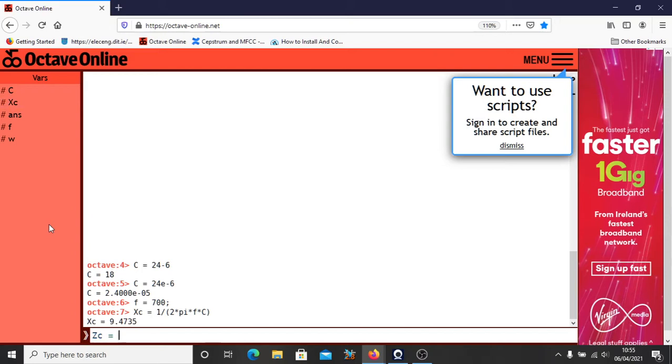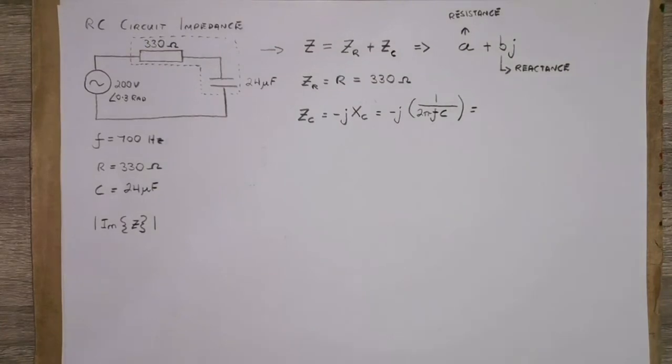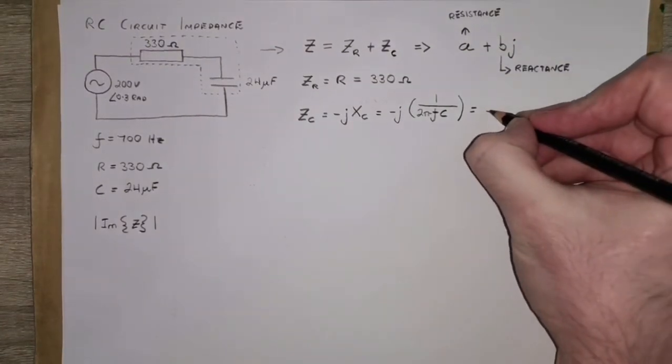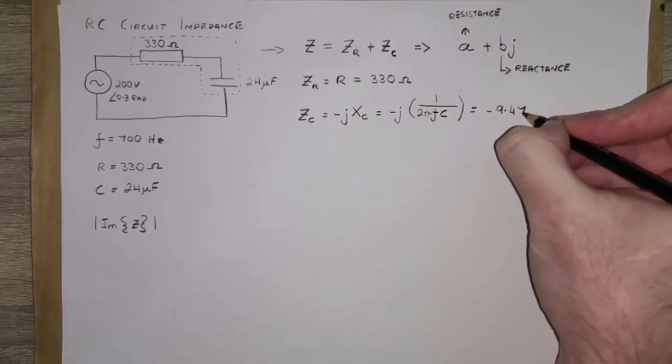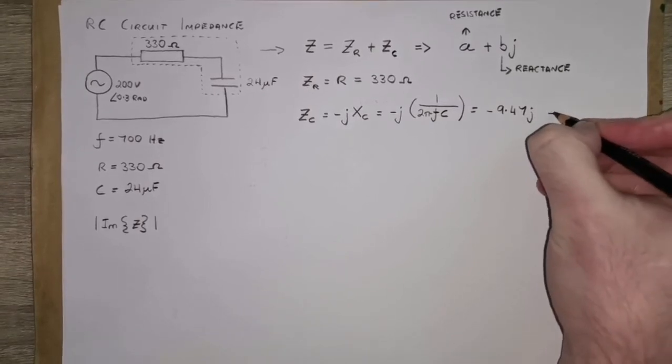That gives us back 9.47 ohms. But the impedance of a capacitor, it's minus J times capacitive reactance. You can see here, this is an imaginary value. No real part, all imaginary. So we can pass that value in here, minus 9.47 J ohms.